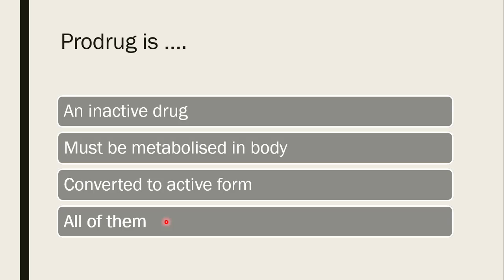Next question: a pro-drug is — an inactive drug, a drug that should be metabolized in the body, converted to active form after metabolism, or all of them? The correct answer is all of them. A pro-drug is inactive itself, must be metabolized in the body, and is then converted to its active metabolite.